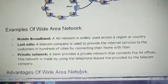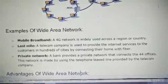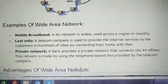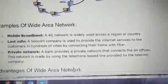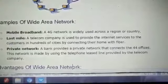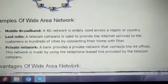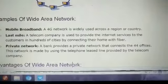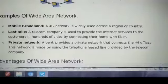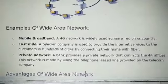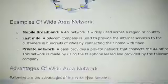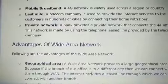They are connecting all areas with fiber optic cable. Next is private networks — for example, a bank provides a private network that connects its offices. This network is made up of telephone leased lines provided by the telecom company, where banks take a lease from the telephone company to get connectivity.